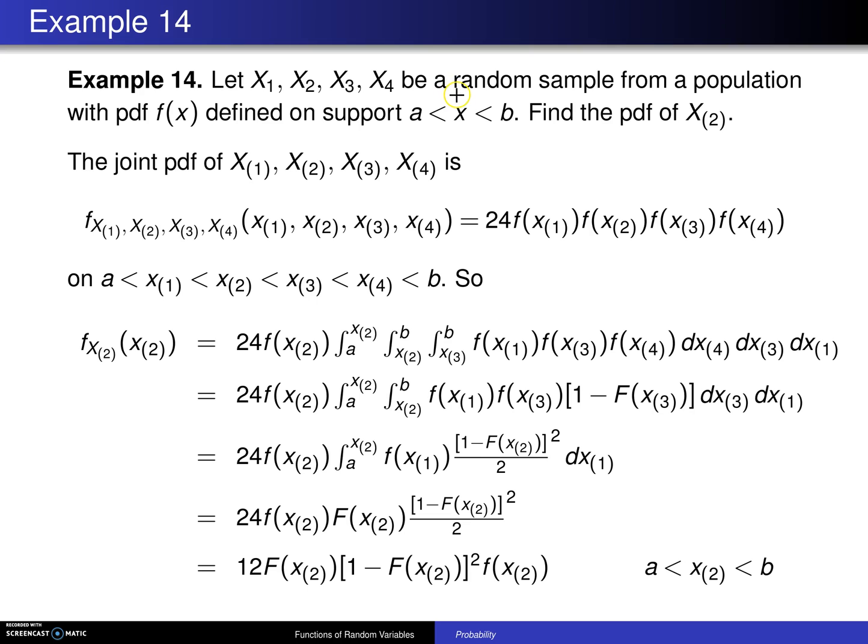Well, the first thing to notice about the assumptions here is that we have a random sample, which means that these four values are mutually independent random variables. Those random variables are being drawn from a population with probability density function f of x. The fact that it is a probability density function says that these four are continuous random variables, and the support is the set of all x values between a and b.